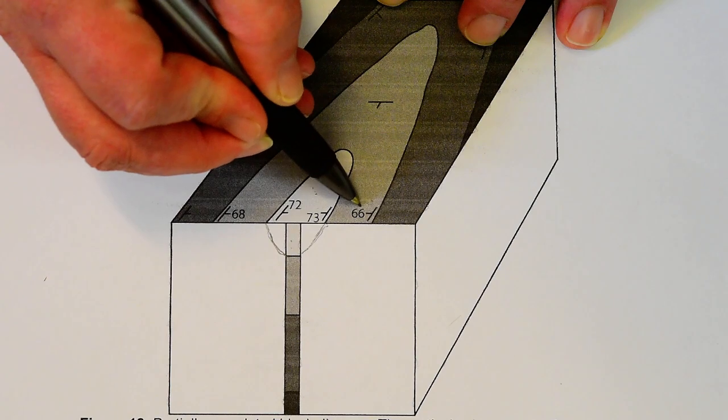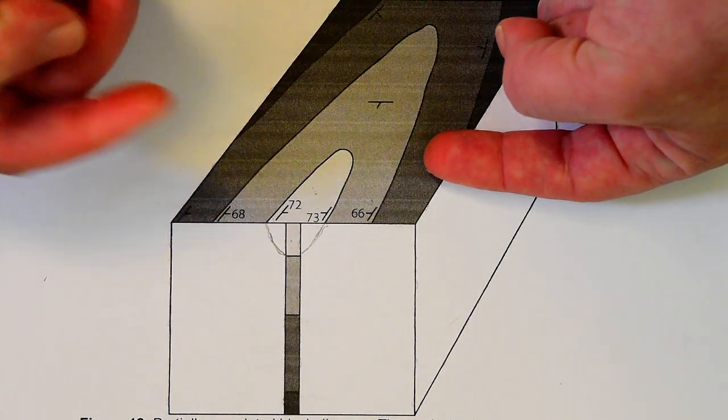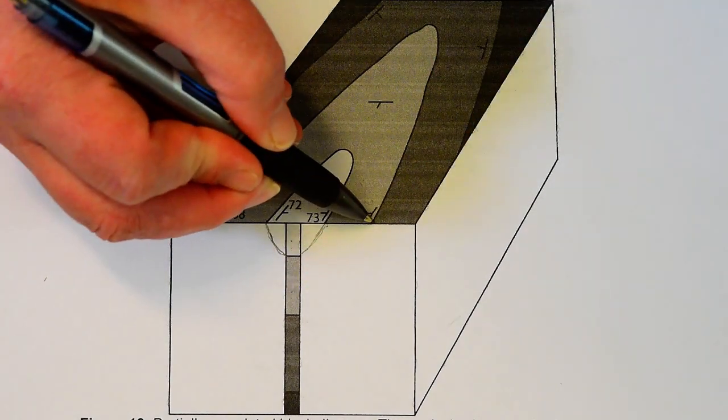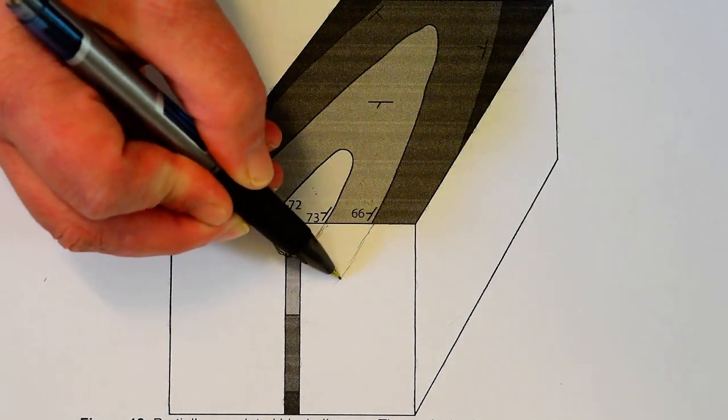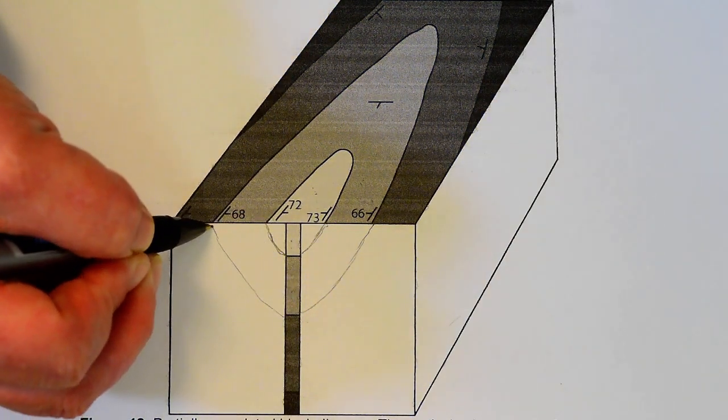Again, these are dipping in that direction. The other side is dipping in that direction. This color is the same as that color. That tells us we can draw these rocks in looking like this.